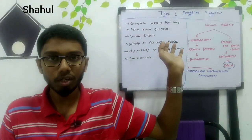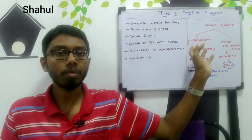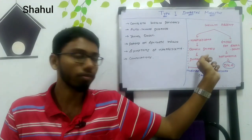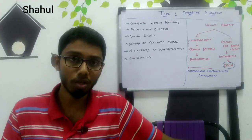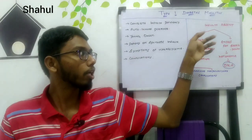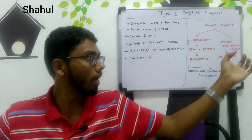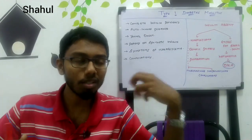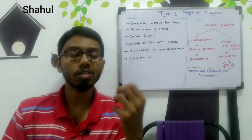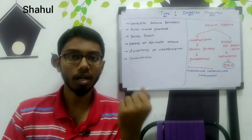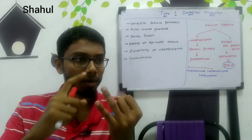To recap: Type 1 diabetes is an autoimmune disorder with complete destruction of beta cells, leading to no insulin. Hyperglycemia develops, causing osmotic diuresis and dehydration. There is also excessive fatty acid breakdown producing ketone bodies, causing diabetic ketoacidosis. Polyphagia occurs because the body senses it has no glucose, causing decreased secretion from the satiety center and stimulation of the feeding center, resulting in a constant sense of hunger.